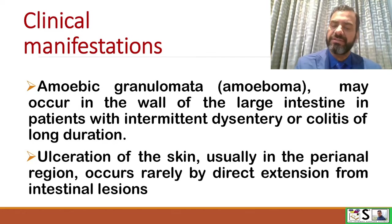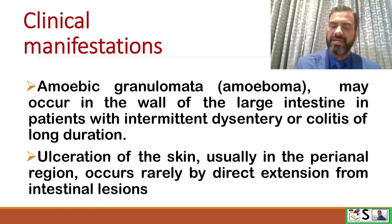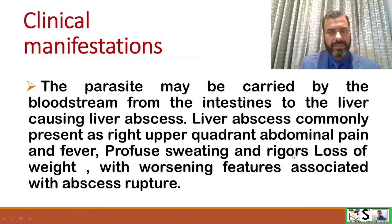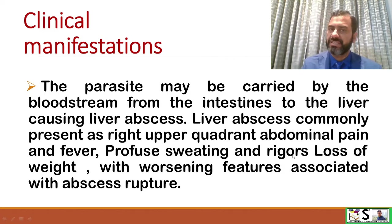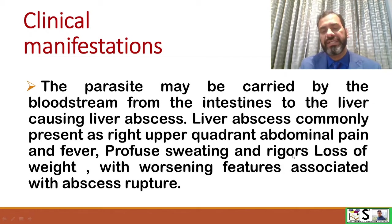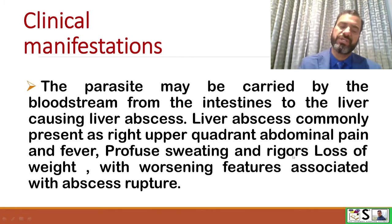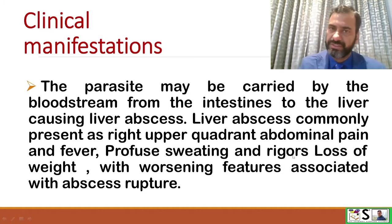Ulceration of the skin, usually in the perianal area, can occur rarely by direct extension from the intestinal lesions. The parasite may be carried by the bloodstream from the intestine to the liver, causing a liver abscess. Liver abscess commonly presents as right upper quadrant abdominal pain, fever, profuse sweating, and rigors, along with loss of weight and worsening features associated with abscess rupture.